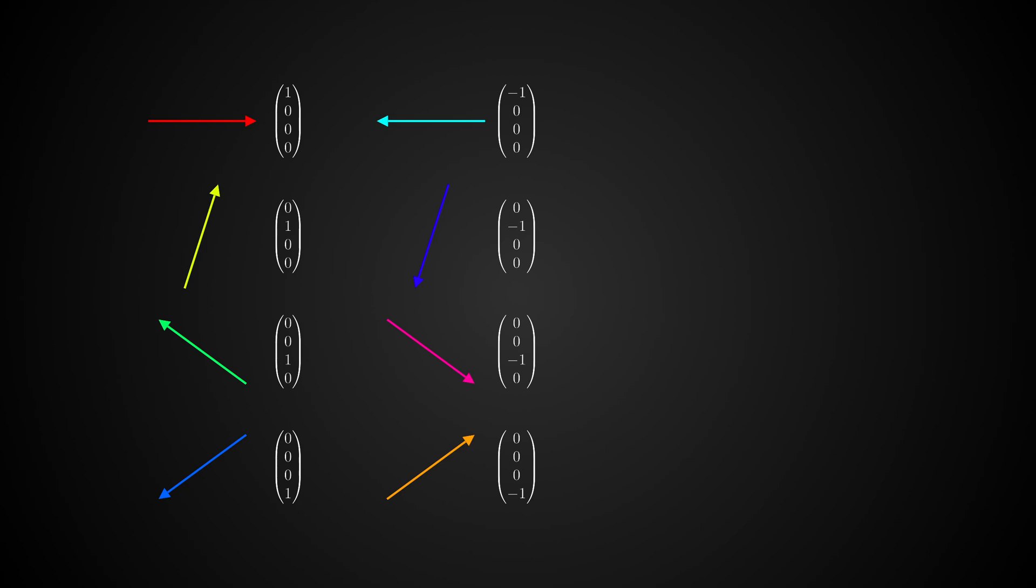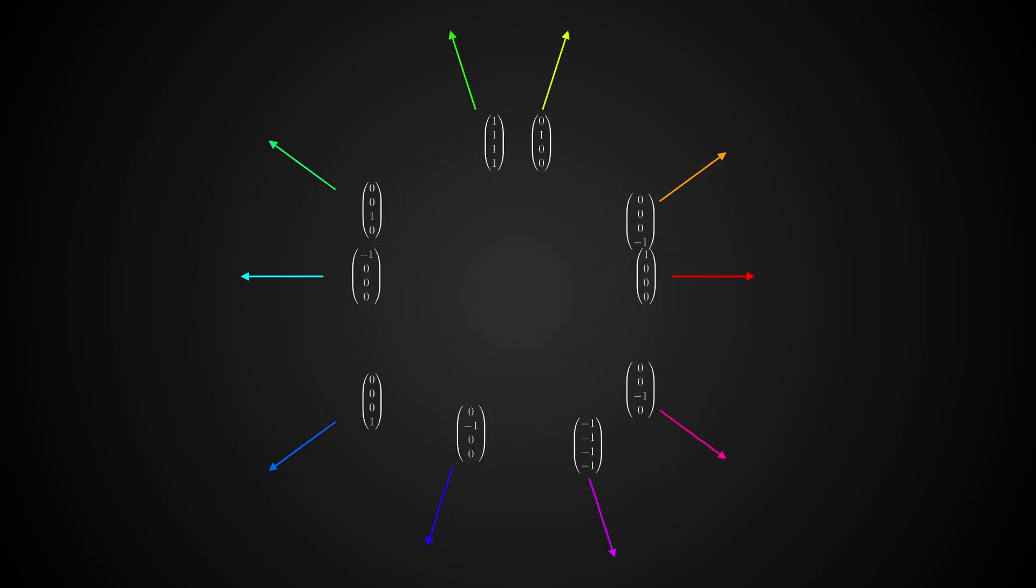Instead of adding arrows, we add these four-dimensional vectors, which means that the two missing arrows have the following coordinates, as demonstrated with the pentagon earlier. Let's rearrange them in the most natural order.